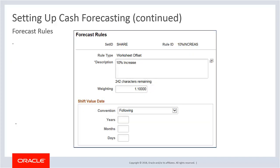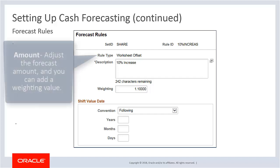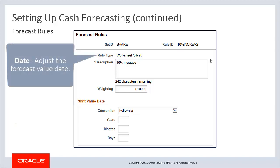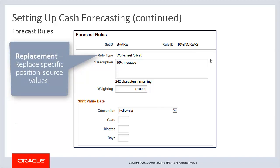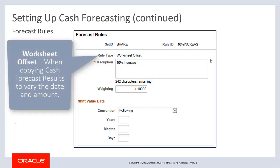Use the forecast rules page to identify forecasting rules to shift or replace forecasting values. Forecast rules are used to shift amount, shift value date based on business convention, year, month, day, or payment method, and replace forecast data values. Five types of rules can be created: Amount, to adjust the forecast amount with a weighting value; Date, to adjust the forecast value date; Payment method, to shift the value date by payment method; Replacement, to replace specific position source values; and Worksheet offset, used when copying cash forecast results to vary the date and amount.